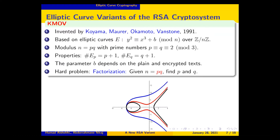The number of points modulo q is also equal to q+1, which is easy to compute. The parameter b in the elliptic curve equation depends on the plaintext and the ciphertext. The hard problem behind KMOV is the factorization problem: given RSA modulus n as the product of two large primes p and q, finding p and q is computationally infeasible.